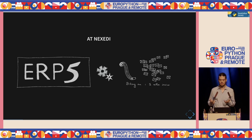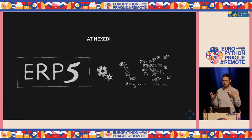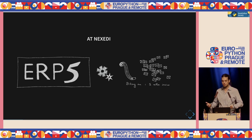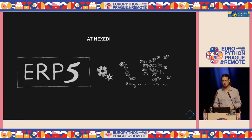At Nexedy, performance matters to us because of the software we write. A good example is ERP5 — it's an enterprise resource planning software. We sell services about it to clients; it's open source of course. These clients have customers, and we have a client with a million customers, which means ERP5 is used every month to generate over a million invoices. This is only going to scale up, so there's a fundamental need to always perform better and optimize everything.